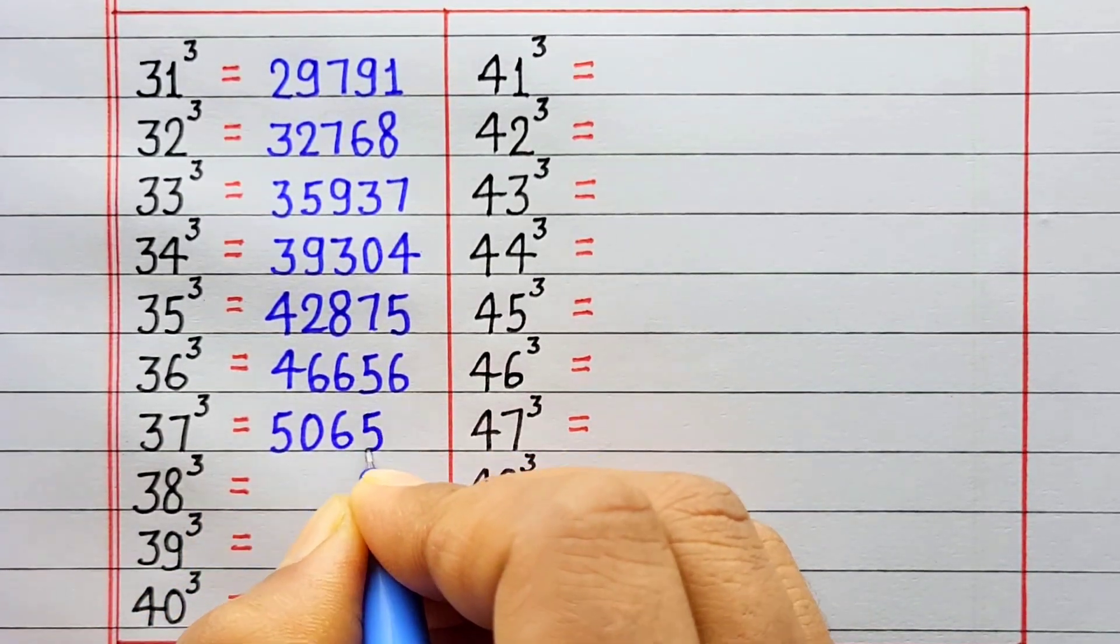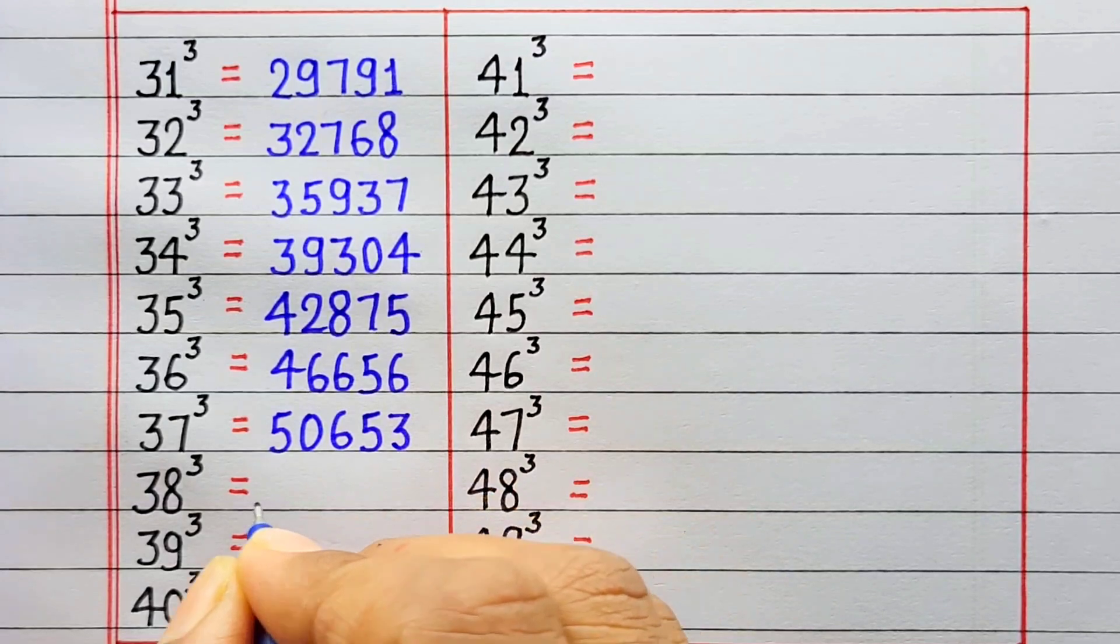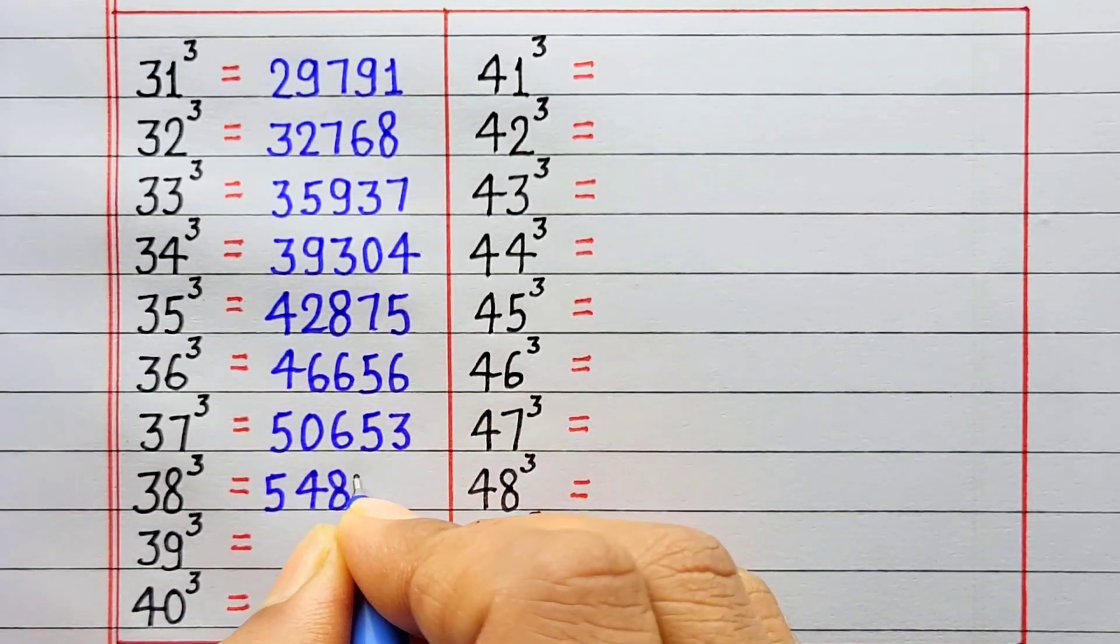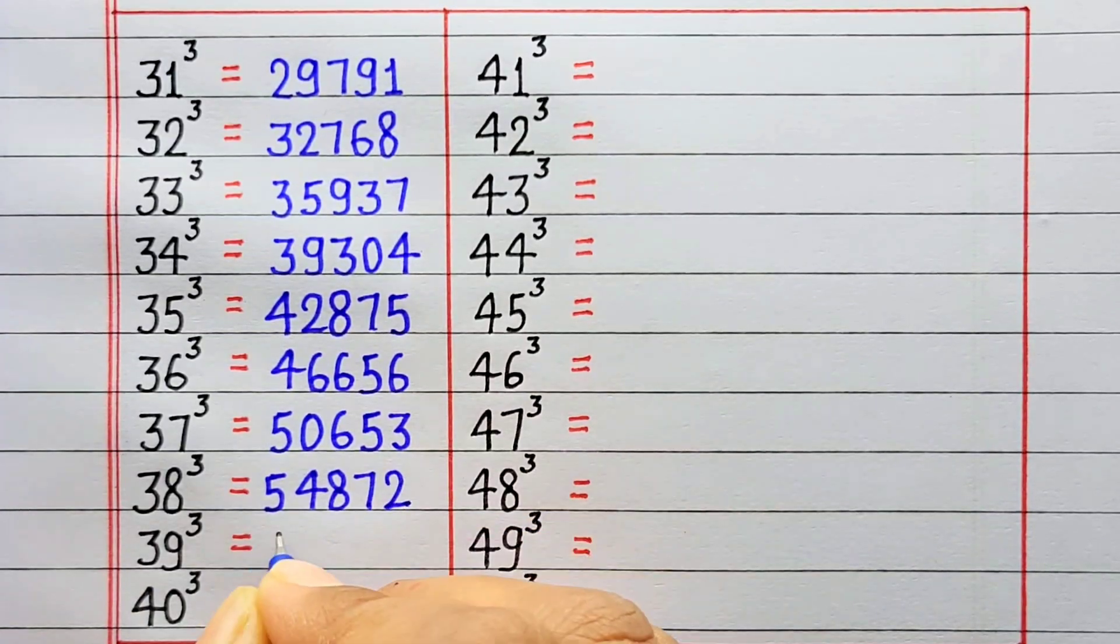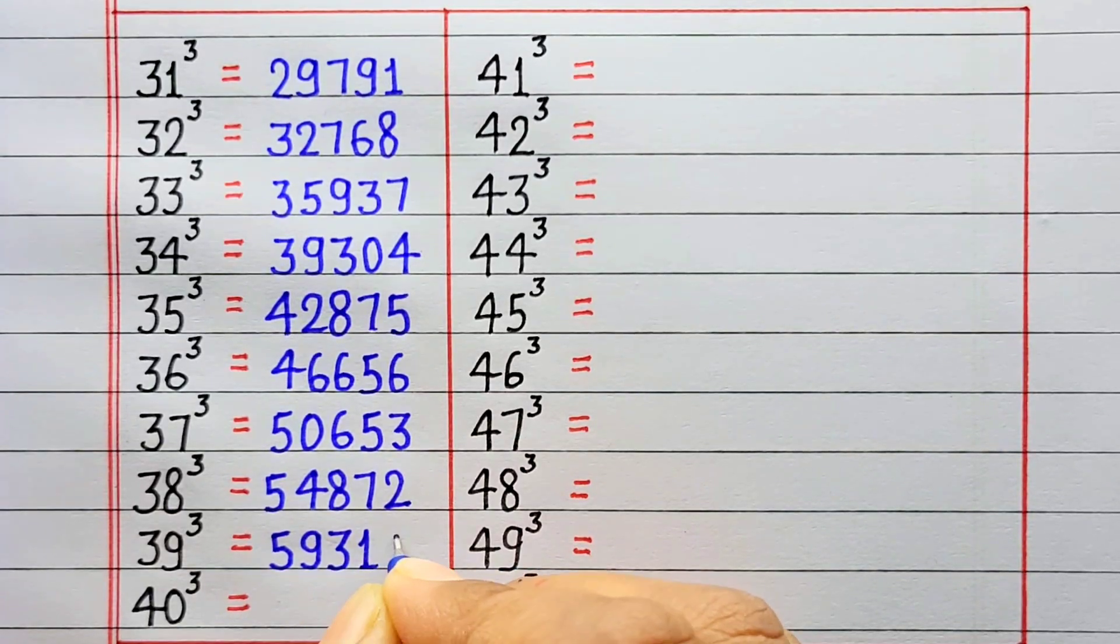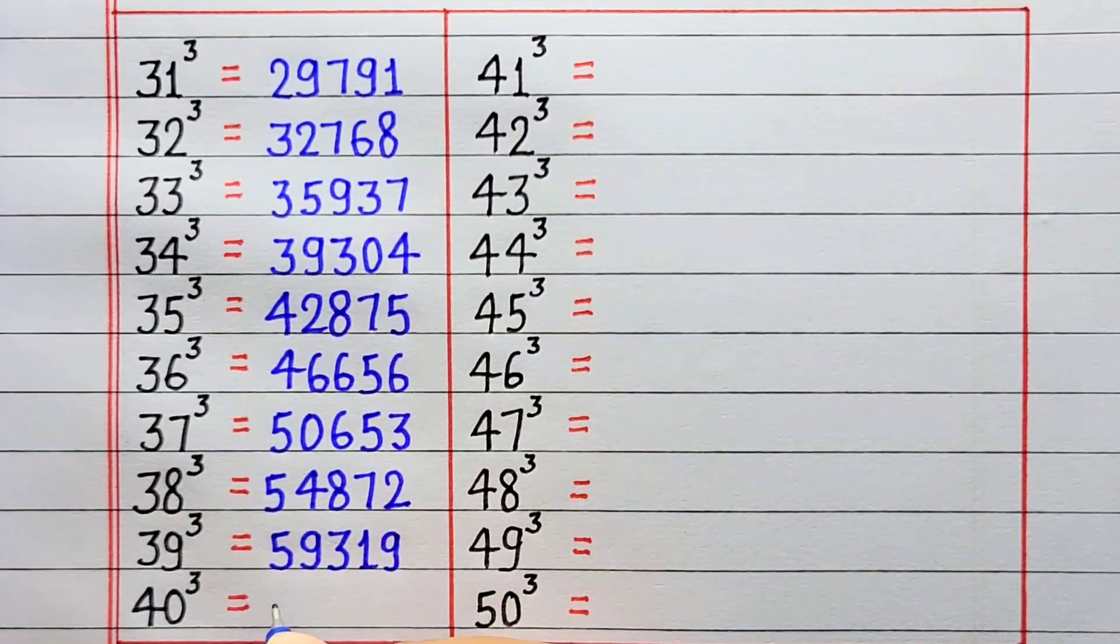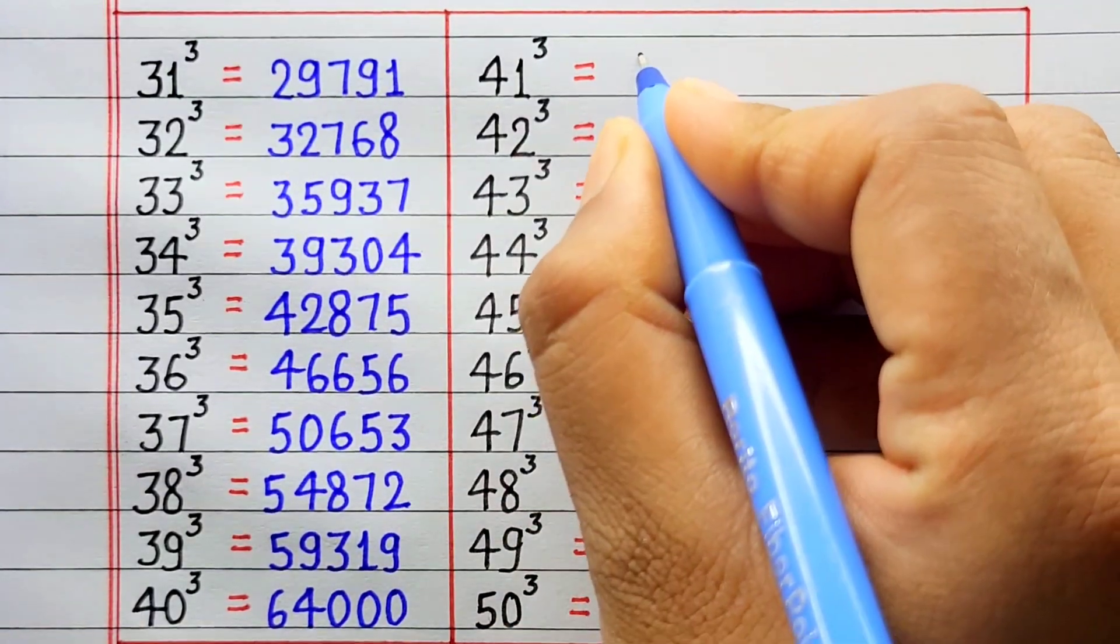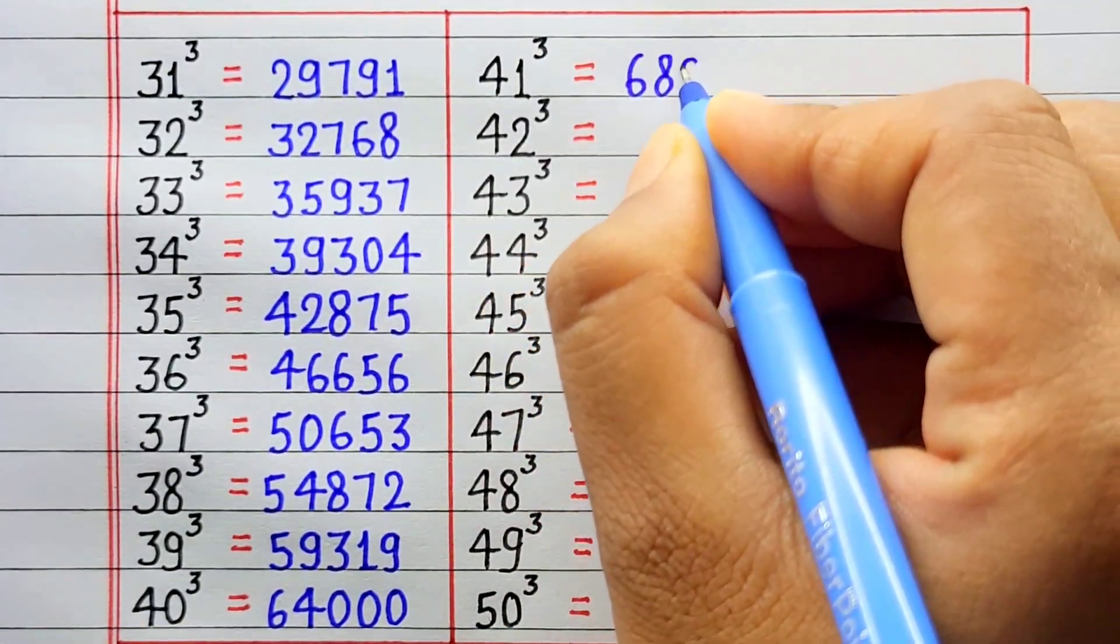Cube of 38 is 54872. Cube of 39 is 59319. Cube of 40 is 64000. Cube of 41 is 68921.